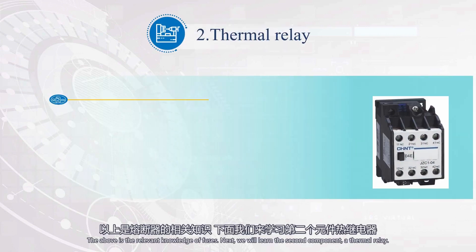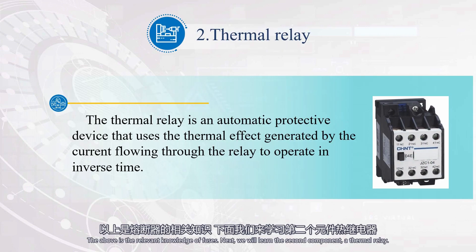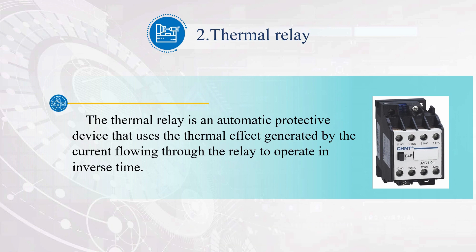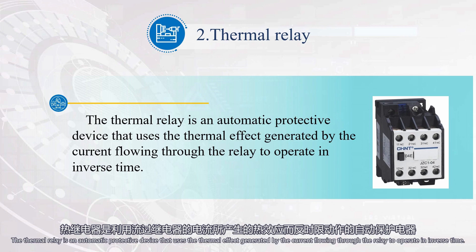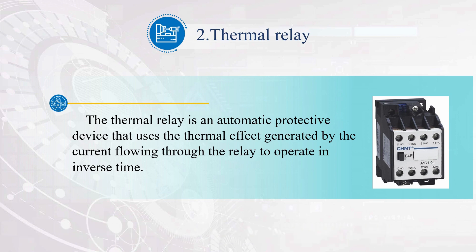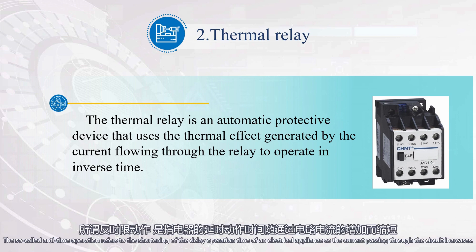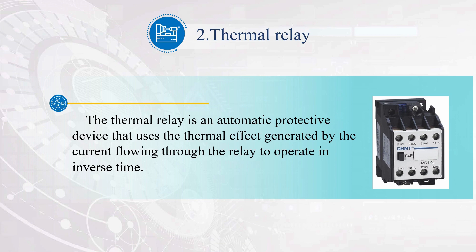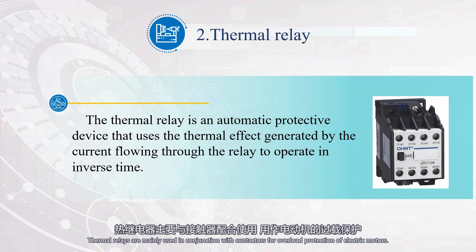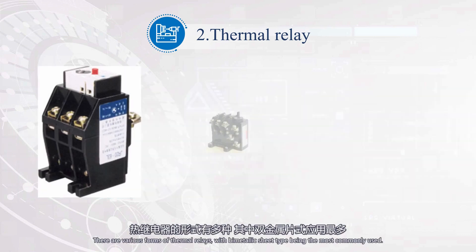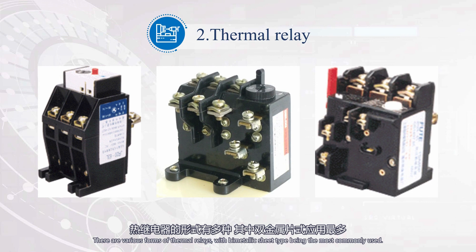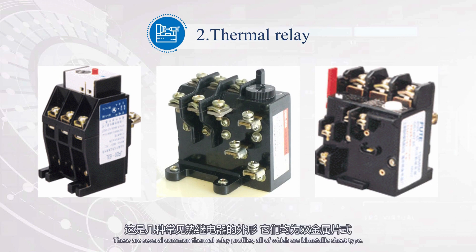Next, we will learn the second component: a thermal relay. The thermal relay is an automatic protective device that uses the thermal effect generated by the current flowing through the relay to operate in inverse time. The so-called inverse-time operation refers to the shortening of the delay operation time as the current passing through the circuit increases. Thermal relays are mainly used in conjunction with contactors for overload protection of electric motors. The bimetallic sheet type is the most commonly used form.